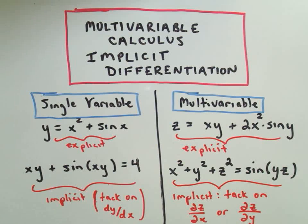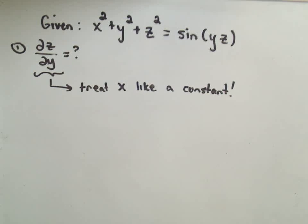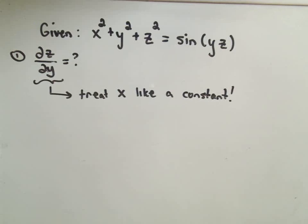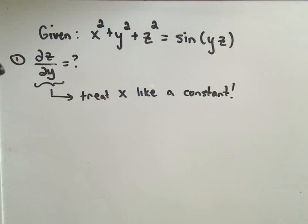Okay, in the second video I'm going to do another implicit differentiation problem. It'll be a follow-up to the other one. In the first one, we had the equation x squared plus y squared plus z squared equals sine of yz. In our other video, we found the partial of z with respect to x.